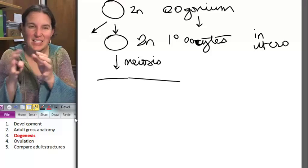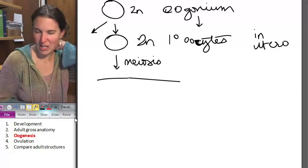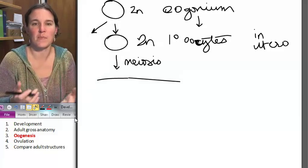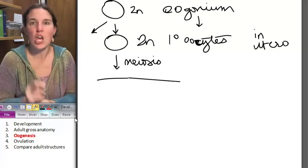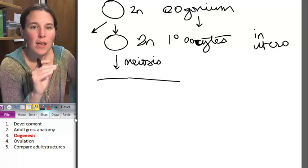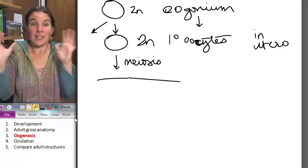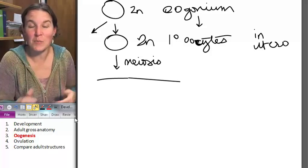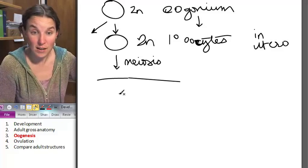And the ten that kind of started the process of maturing, they might start to go through some more meiosis, but nobody does anything else. Everybody is frozen. We've started the process of meiosis, and then we freeze until puberty.